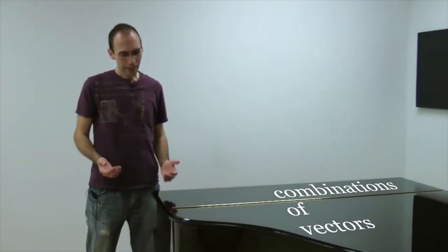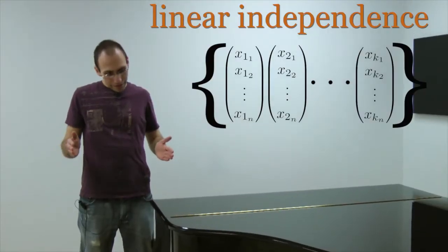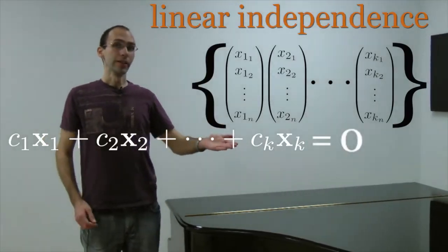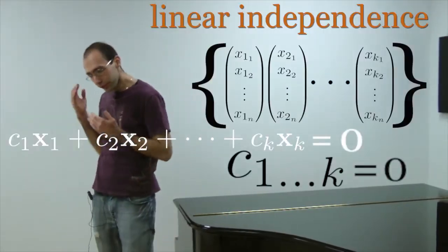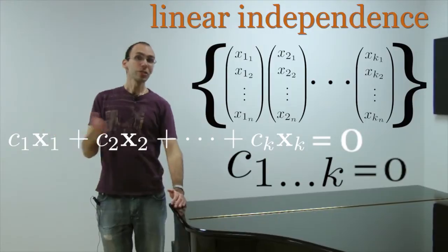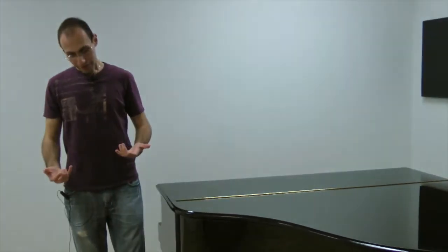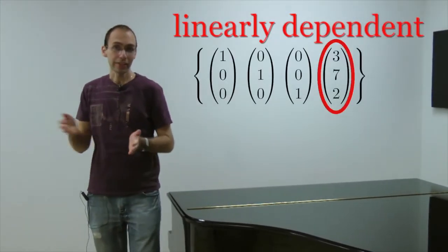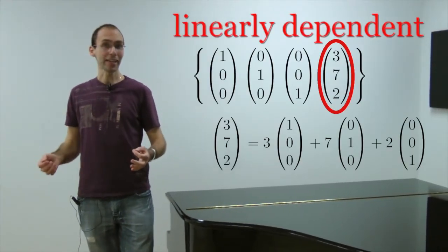A fundamental notion when talking about linear combinations of vectors is that of linear independence. A set of k vectors is linearly independent if the only linear combination of them that equals zero is the one when all of the coefficients are zero. In other words, if we try to solve this equation, the only solution is the one where the c's are all set to zero. Conversely, you could say that a set of vectors is linearly dependent if one of them can be written as a linear combination of the rest. So one of them is a linear combination of the remaining k minus 1.